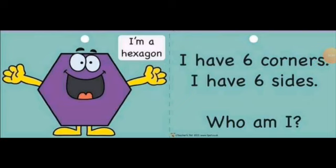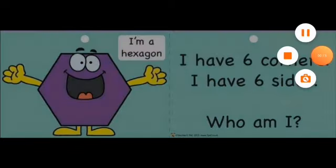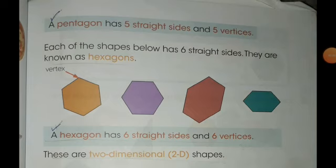I am a hexagon. I have six corners, which means six vertices. I have six sides. These are all called hexagons. Why? Because a hexagon has six straight sides and six vertices.